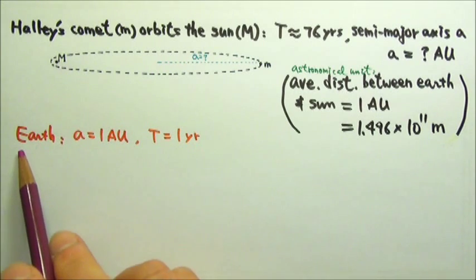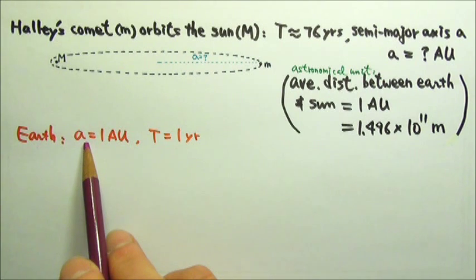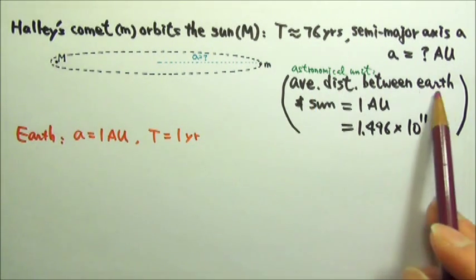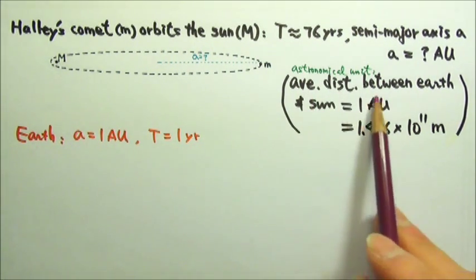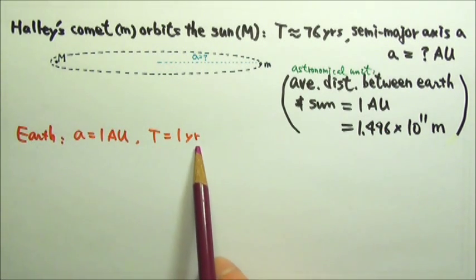We know that the Earth also orbits around the Sun, and we know that the semi-major axis of the Earth's orbit is the average distance between the Earth and the Sun, 1 AU. We also know that it takes the Earth one year to go around the Sun once.